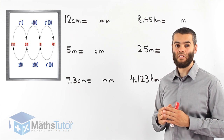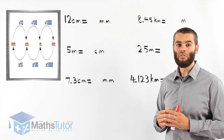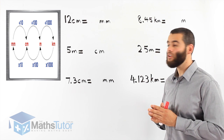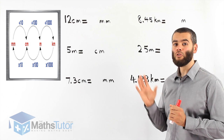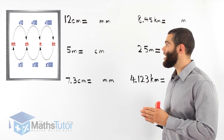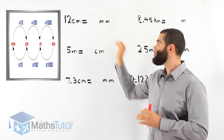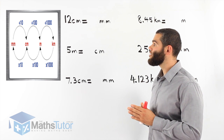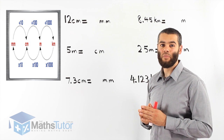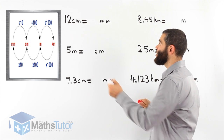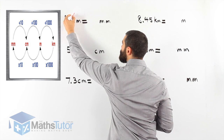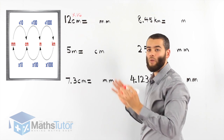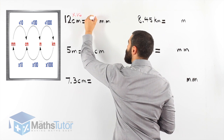Now that we've understood the process, let's do some practical examples and we'll understand it even better. Here, we're asked to convert from a larger unit to a smaller one. In this case, we're asked to go from 12 centimetres to millimetres. We look at our diagram: from centimetres to millimetres, we times by 10. So, 12 times 10 equals 120.